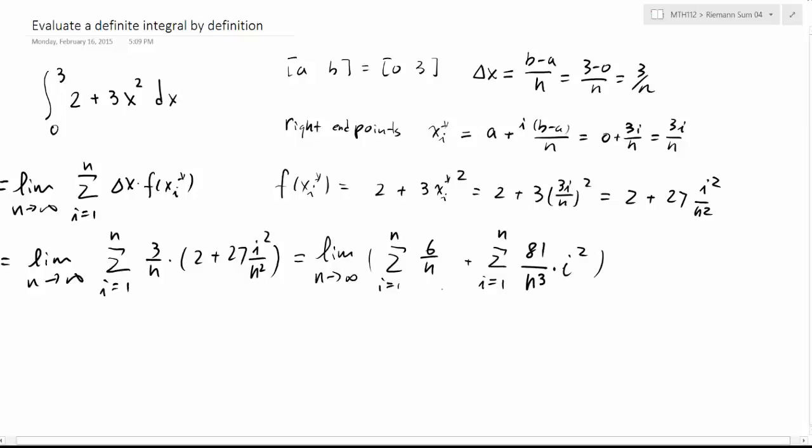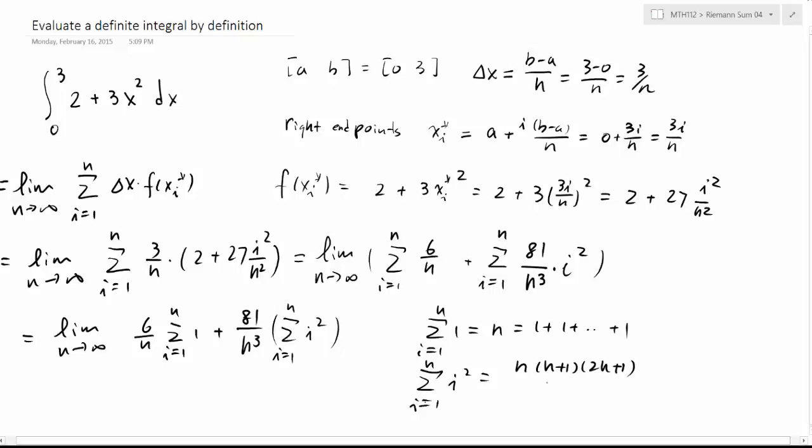Since in these two sums, i is the index and n is really a constant, we pull the terms about constants out. N goes to infinity, and then we have 6 over n and sigma i goes from 1 to n of 1, plus 81 over n cubed and sigma i squared. Now i goes from 1 to n. Sometimes it's not so easy to see that i goes from 1 to n of 1 is really equal to n because you have n copies of 1 to add up. And sigma i from 1 to n, this is a familiar formula now, it's n times (n plus 1) times (2n plus 1) over 6.